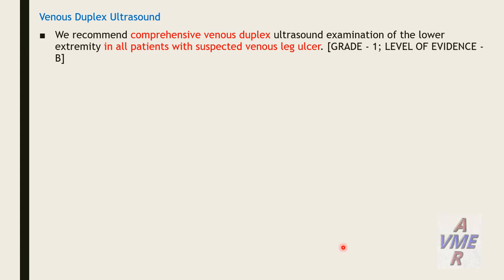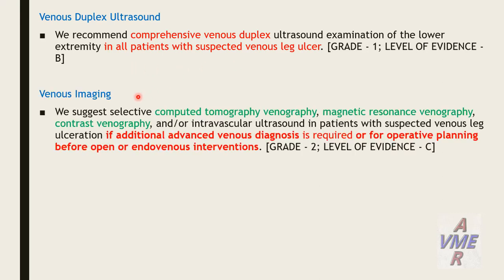Now returning to American Venous Forum guidelines for venous ulcer management. Venous duplex ultrasound: we recommend comprehensive venous duplex ultrasound examination of the lower limb extremity in all patients with suspected venous leg ulcer. For further venous imaging — CT venography, MR venography, and IVUS — these can be used if additional advanced venous diagnosis is required or for operative planning before open or endovenous intervention.